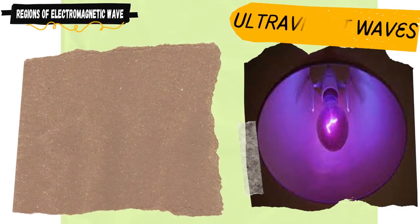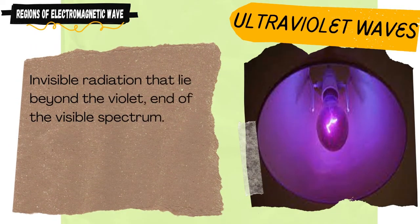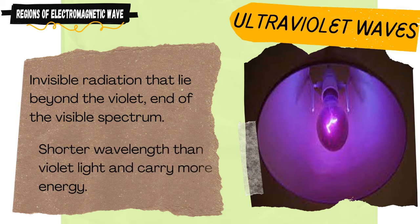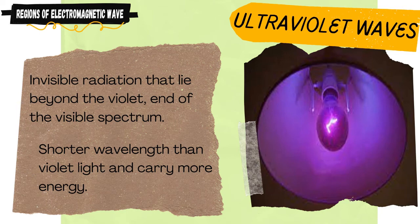Ultraviolet waves are invisible radiation that lie beyond the violet end of the visible spectrum. Ultraviolet light has a shorter wavelength than violet light and carries more energy. The sun is our main source of ultraviolet light.